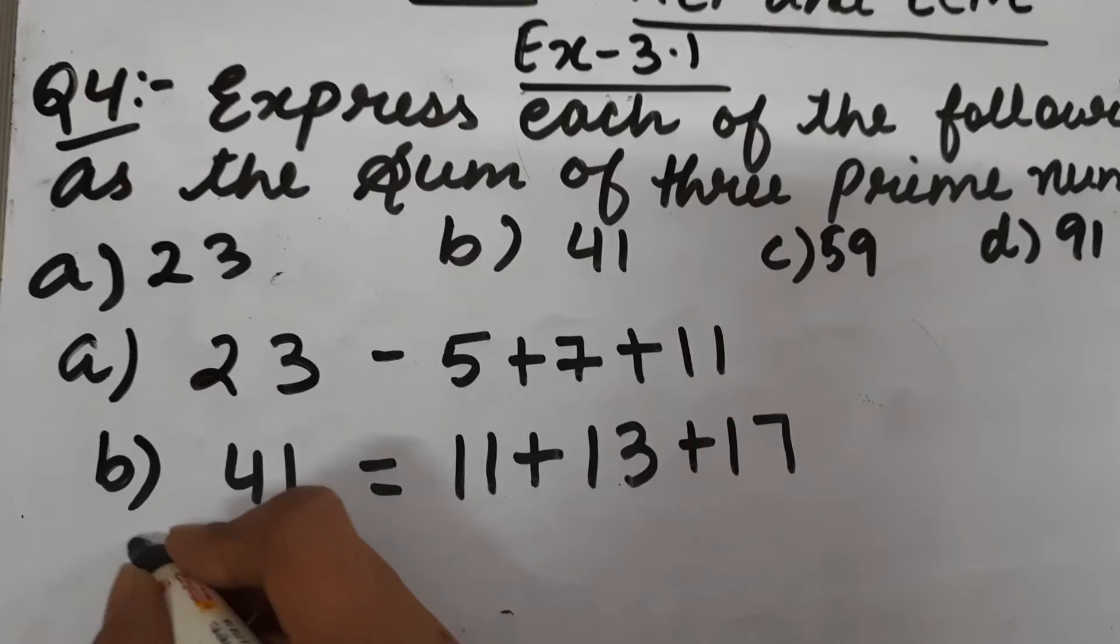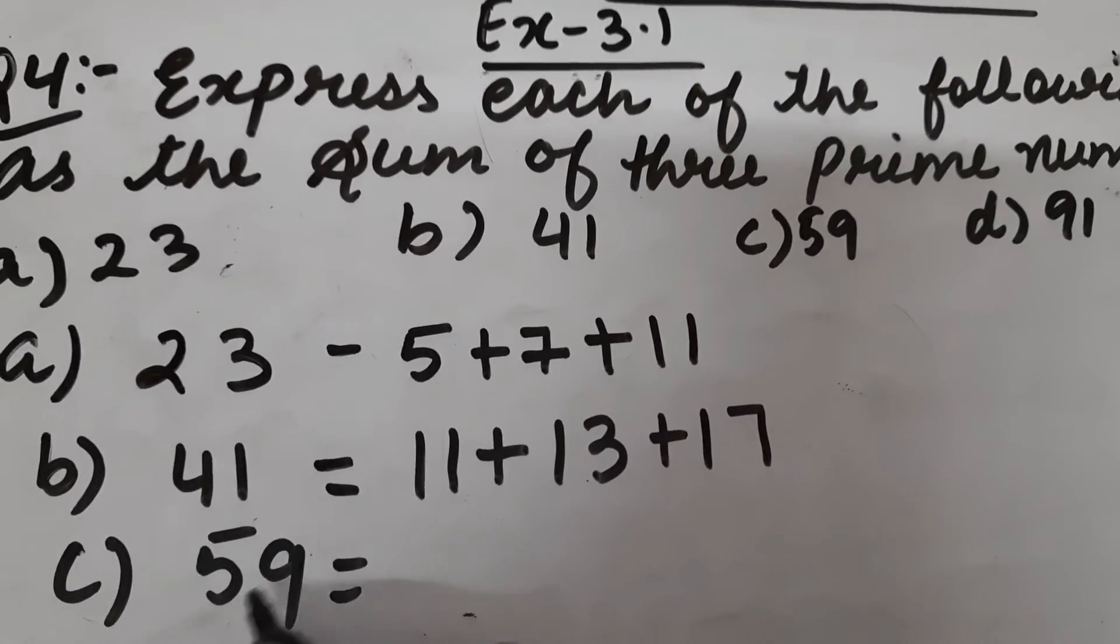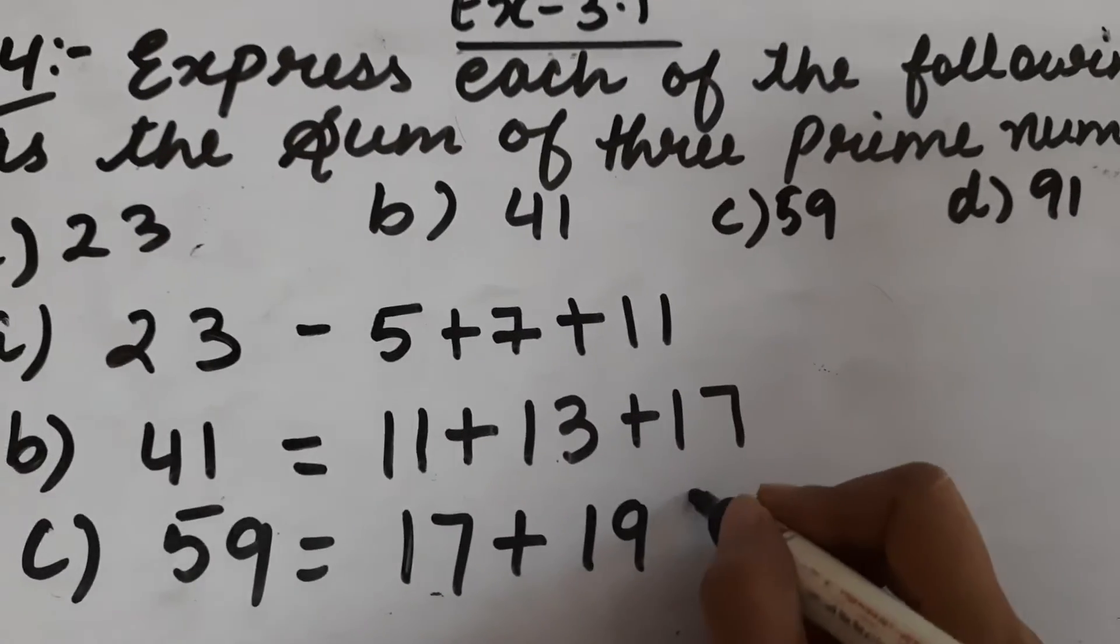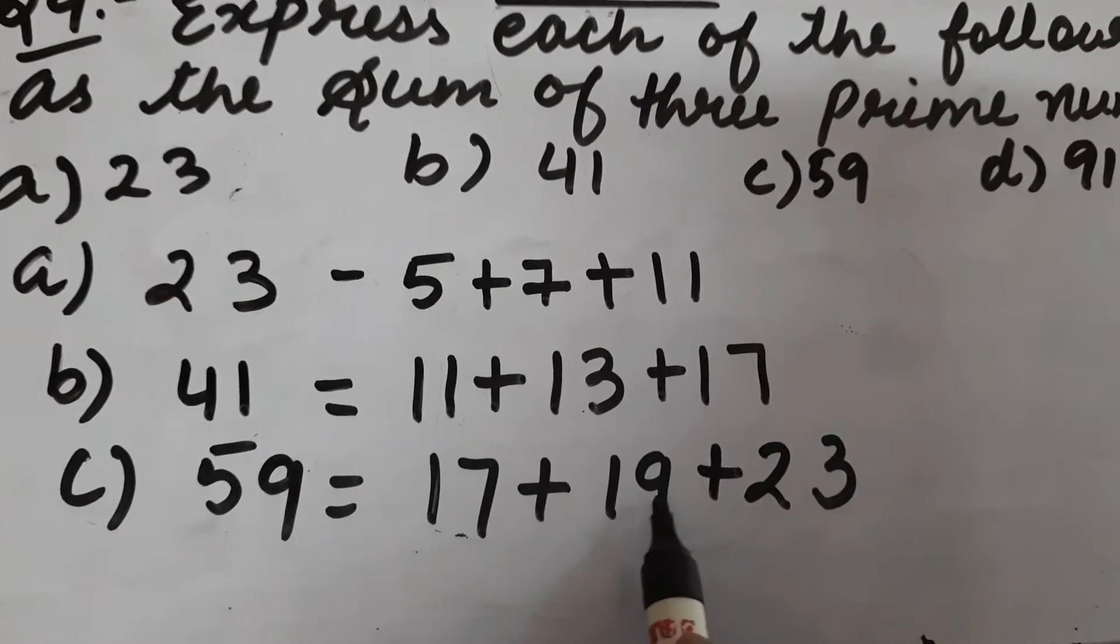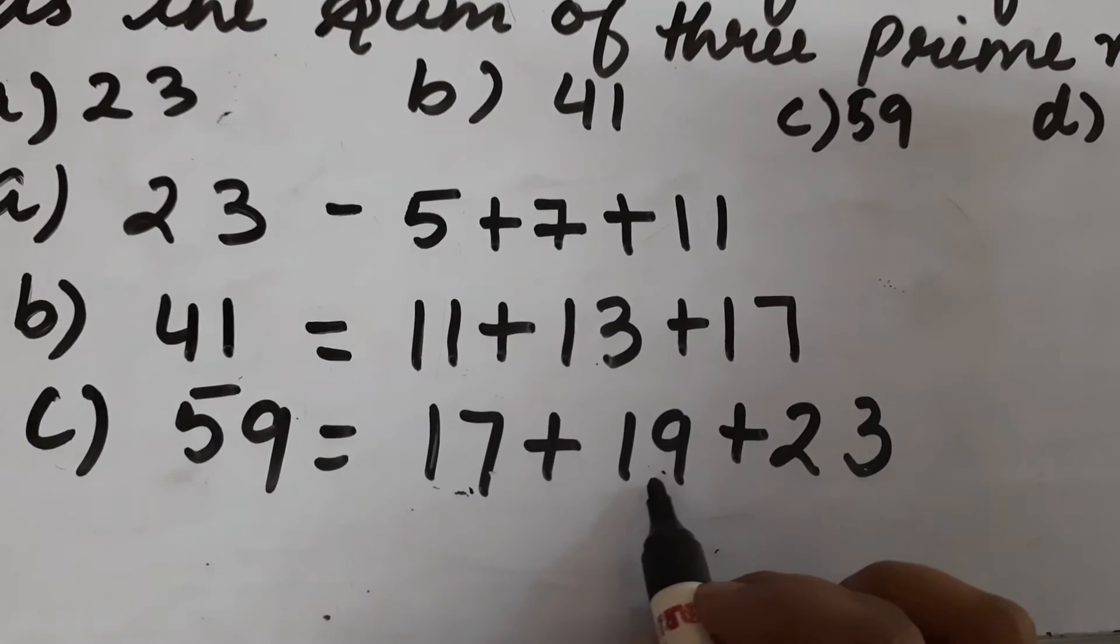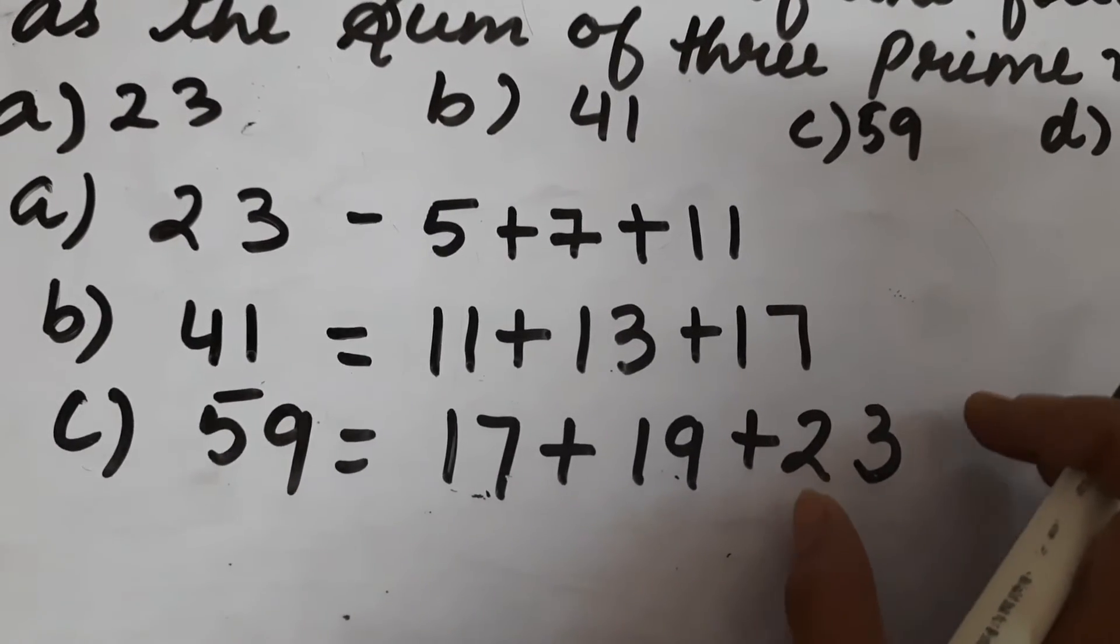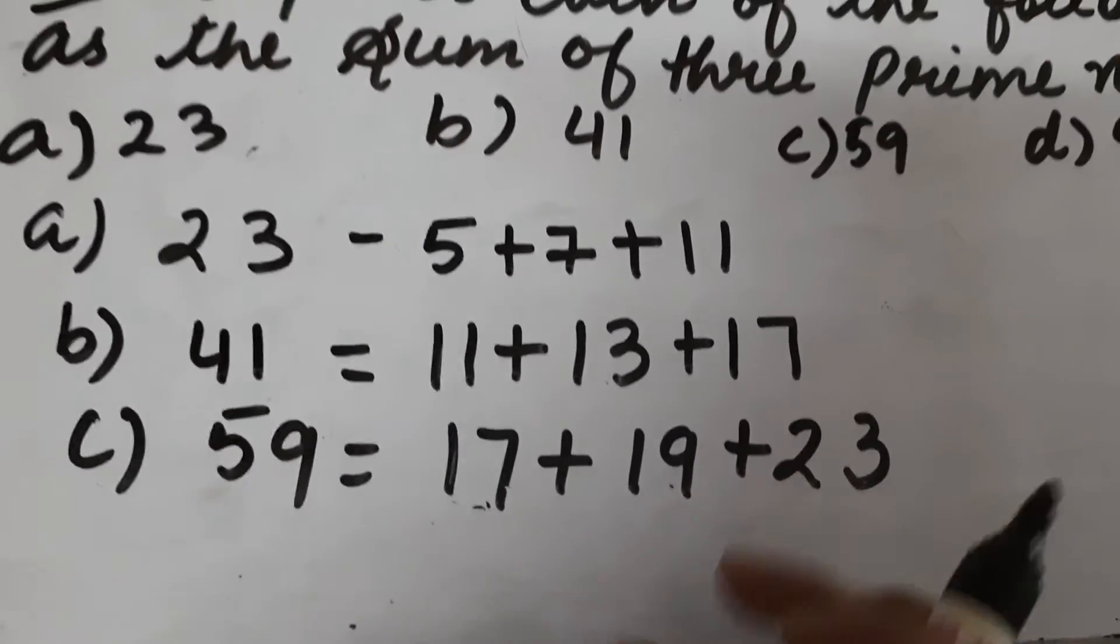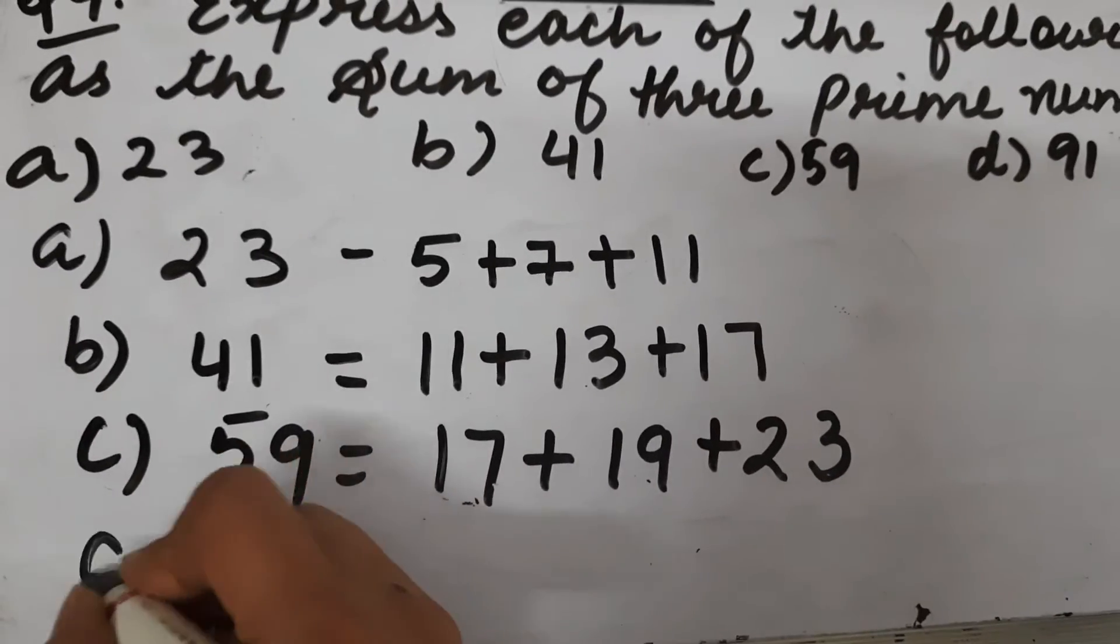Part C is 59. We have to write 59 as sum of three prime numbers. So we will write it as 17 plus 19 plus 23. 17 plus 19 is 36, and 36 plus 23 is 59. So 59 can be written as 17 plus 19 plus 23.